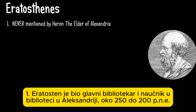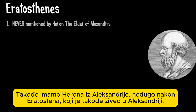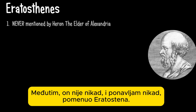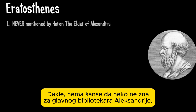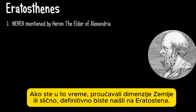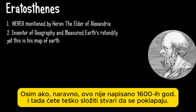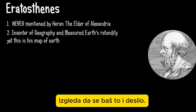Eratosthenes was the head librarian and scholar at the Library of Alexandria around 250 to 200 BC. We also have Heron the Elder from Alexandria, not many years after Eratosthenes, who also lived and was from Alexandria. He wrote many books and people have praised him many times over. However, he never — and I repeat — never mentioned Eratosthenes. They both studied the same subject, so there's no way that somebody would not know about the head of the Library of Alexandria. Unless, of course, things were written in 1600, and then you'd have a hard time getting all your details lined up.